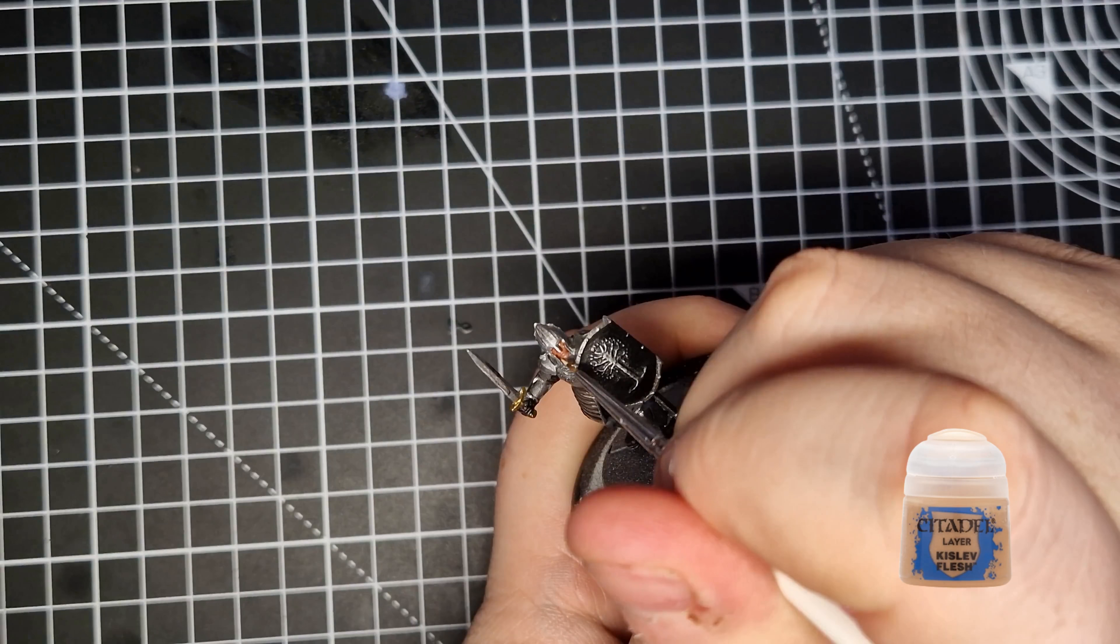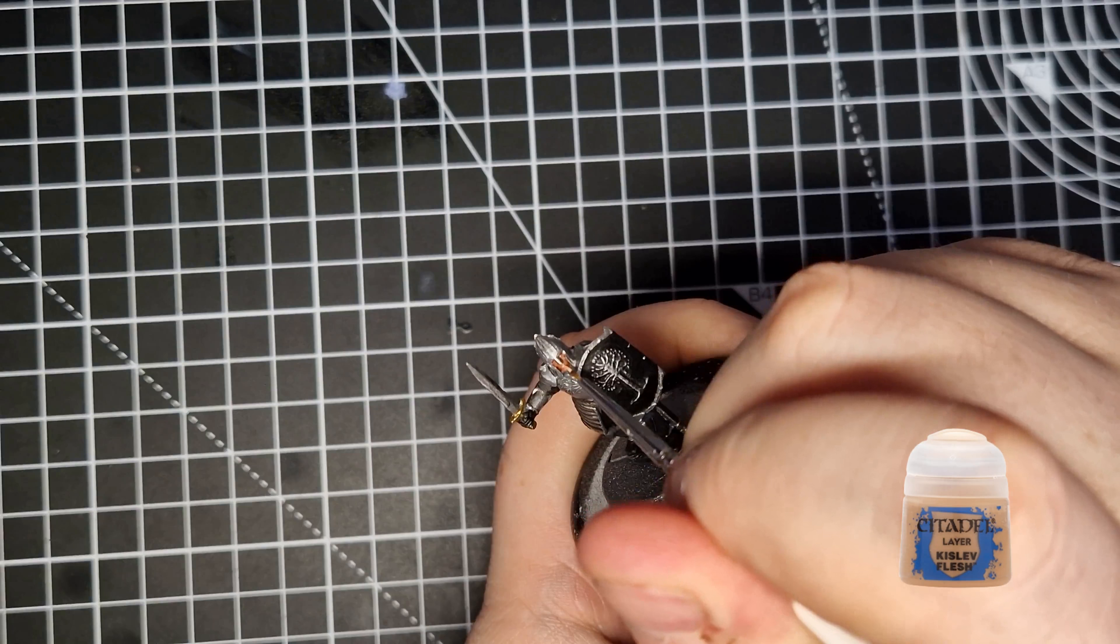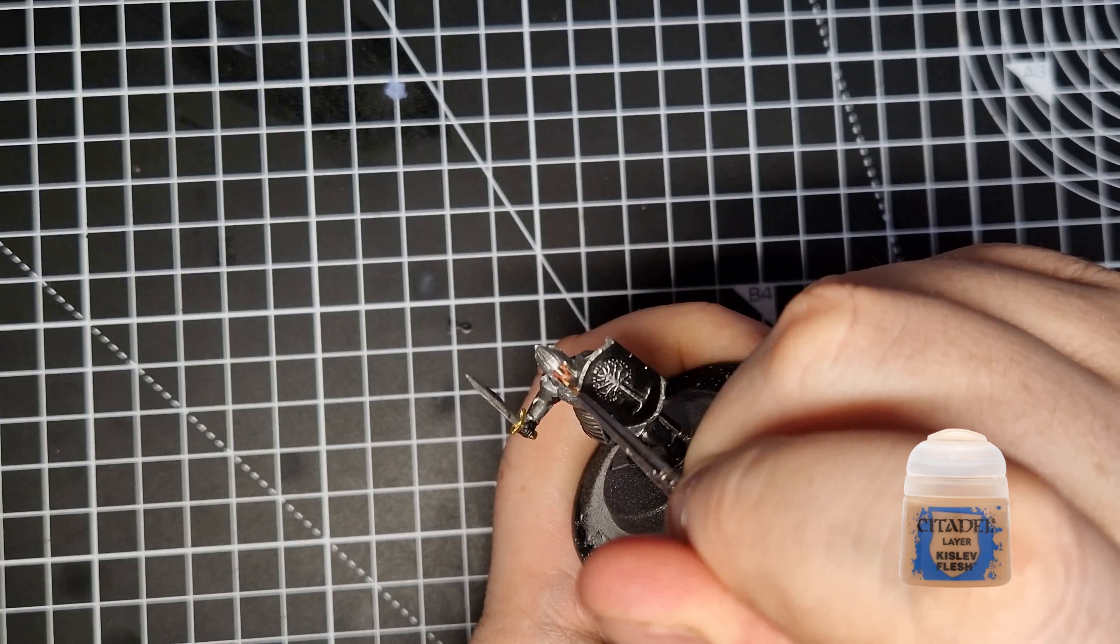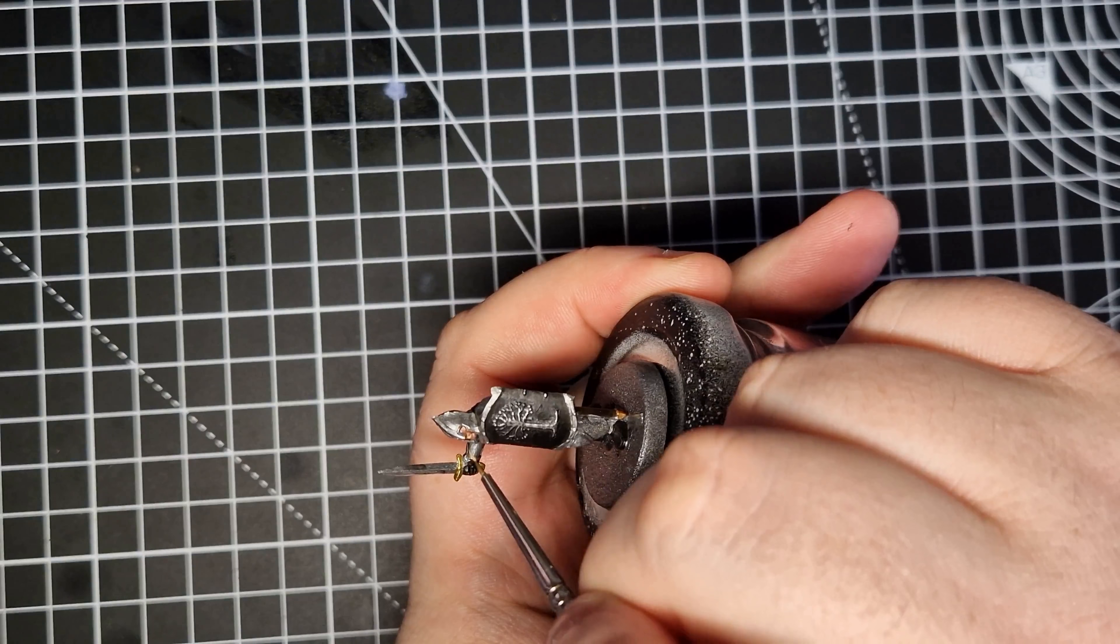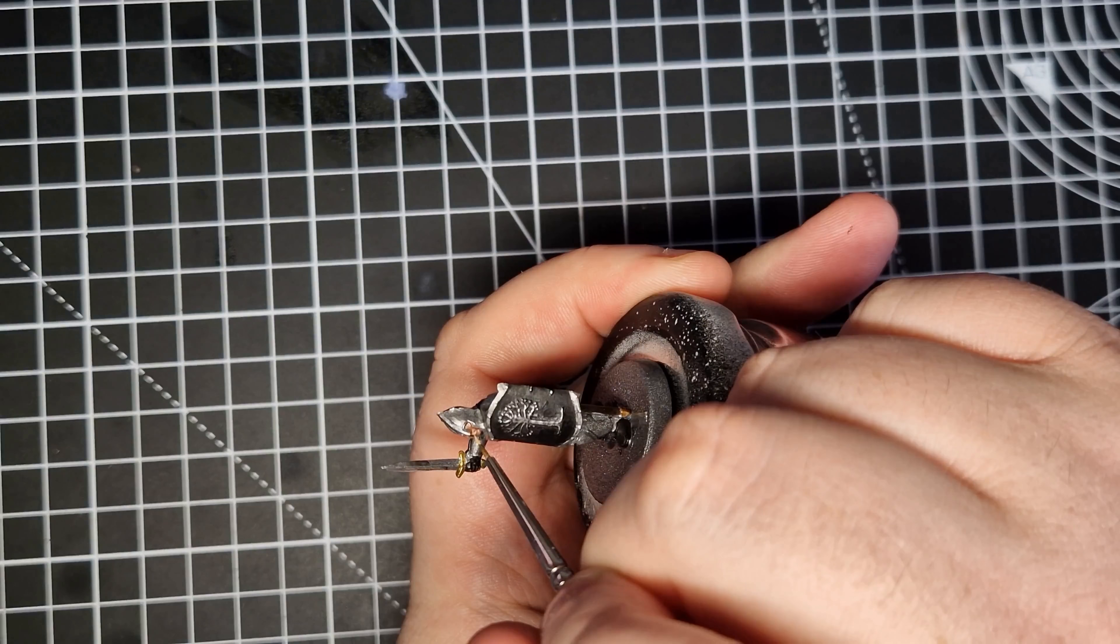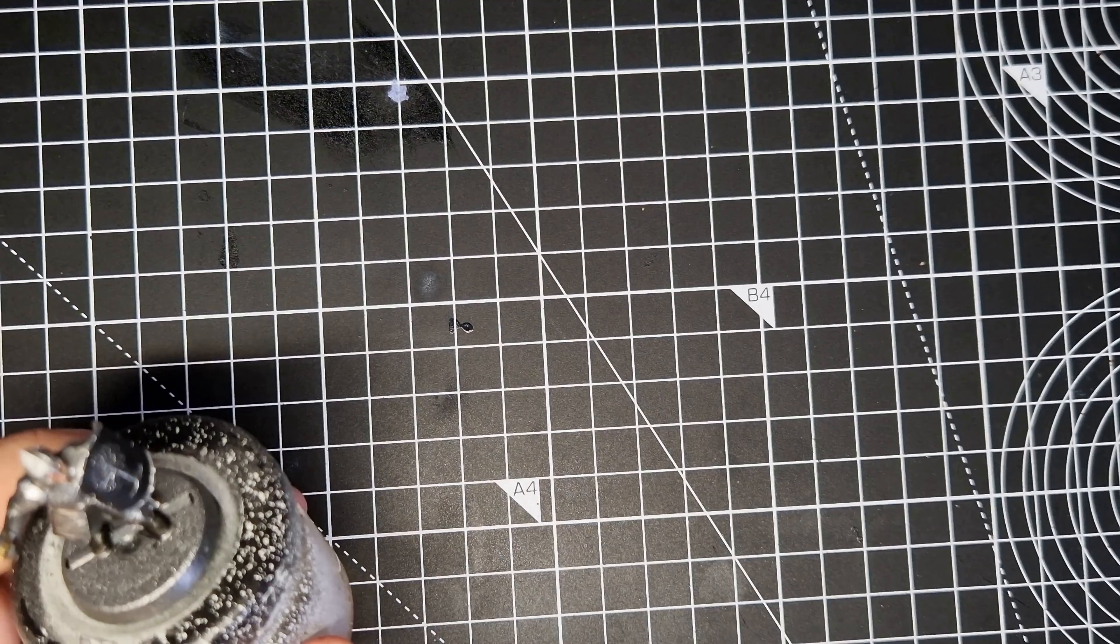Next up we're going to use Cadian Fleshtone and we're using that for the part that I am dreading the most, highlighting the face. I know everyone says faces and bases are the most important part for a mini but I am just terrible at highlighting faces. So I'm just going to go in a little bit, highlight the cheeks and the lips and I'm going to call it done. I'm not doing eyes, I'm not even going to attempt it.